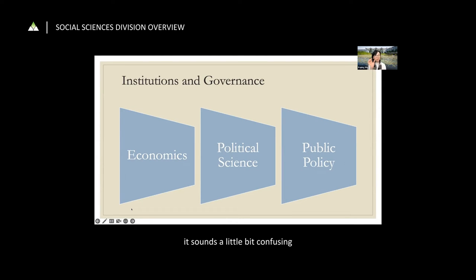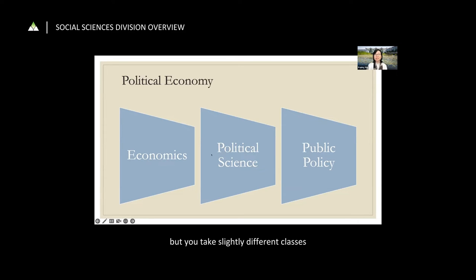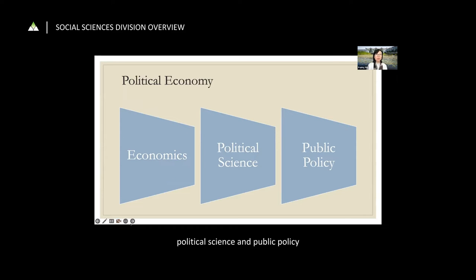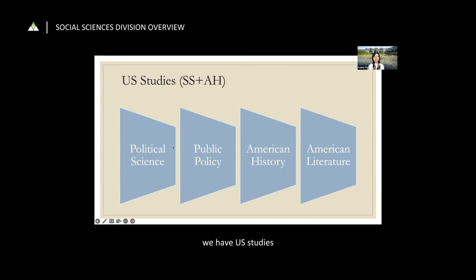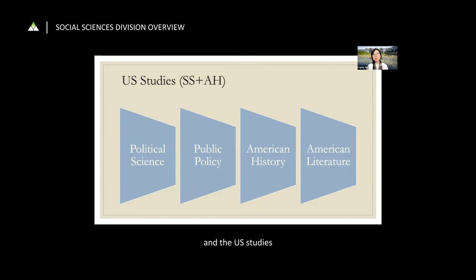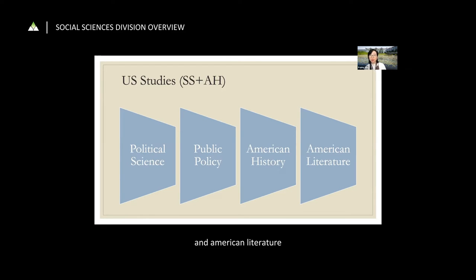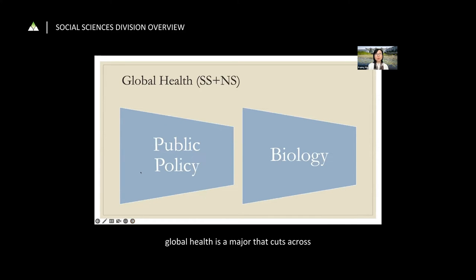If you're an economics major in institutions and governance versus political economy, you take similar disciplinary economics courses but different interdisciplinary courses for each major. US studies cuts across social sciences and arts and humanities — political science and public policy are the more social-science tracks, while American history and American literature are arts and humanities tracks. Global health has two tracks: public policy, which is a social science track, and biology, which is a natural science track.